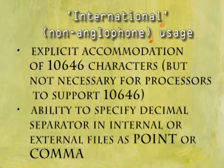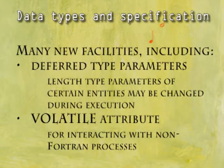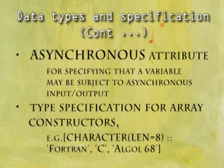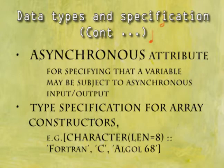Ability to specify decimal separator in internal or external files as point or comma. Data types and specifications include many new facilities including default type parameters. Length type parameters of certain entities may be changed during execution. Volatile attribute for interacting with non-Fortran processes. Asynchronous attribute for specifying that a variable may be subject to asynchronous input or output. Type specification for array constructors — for example, character length equal to 8: Fortran C, Algol 68.